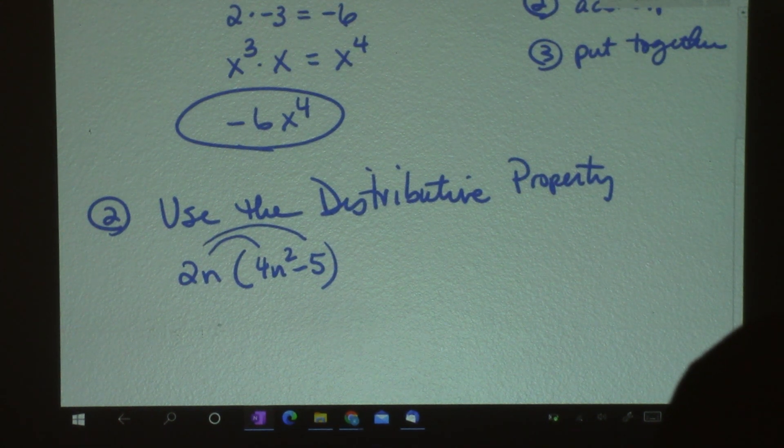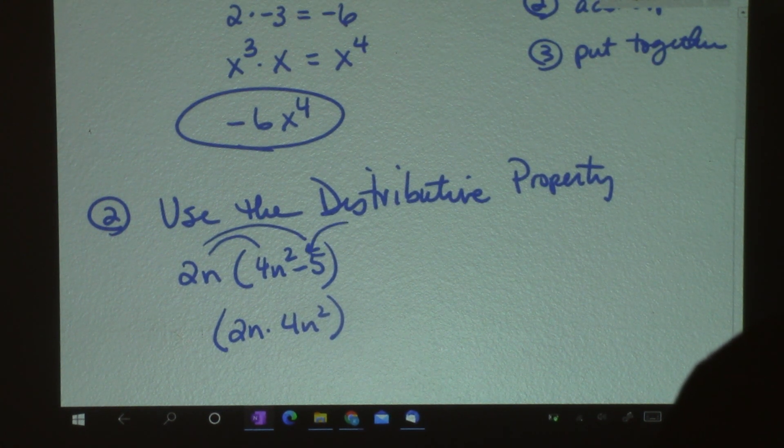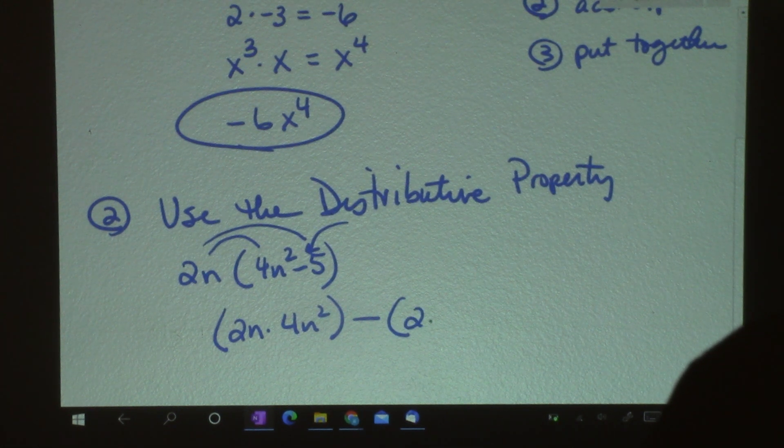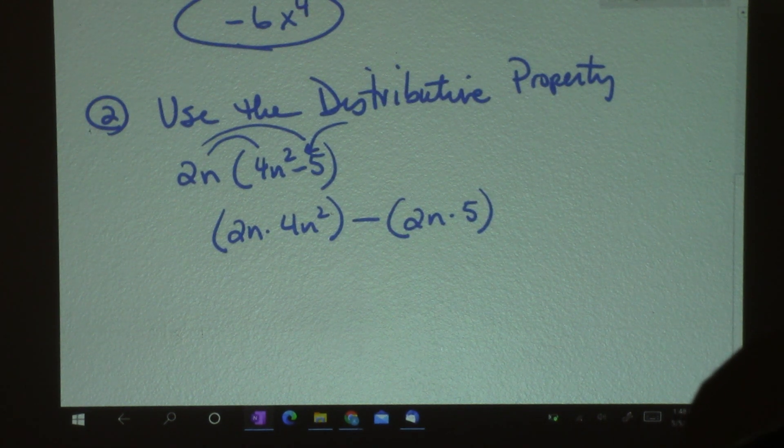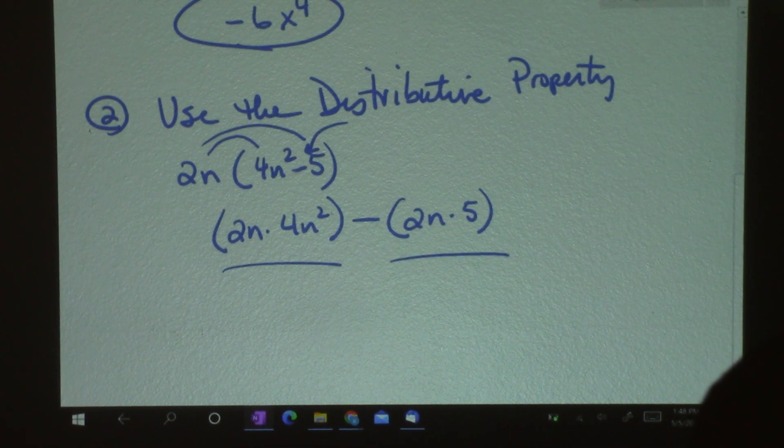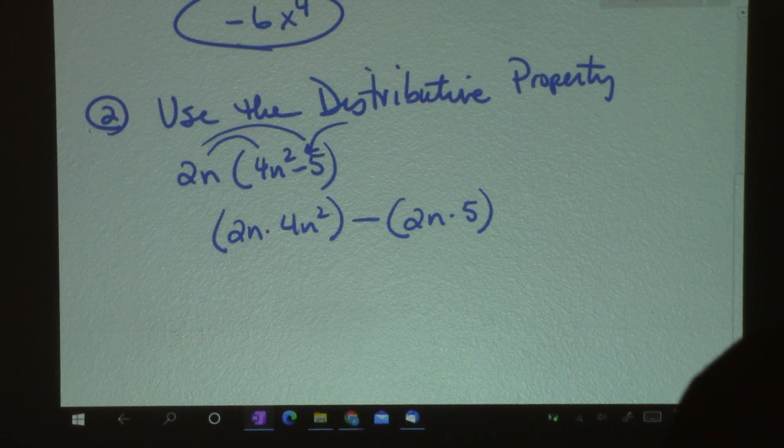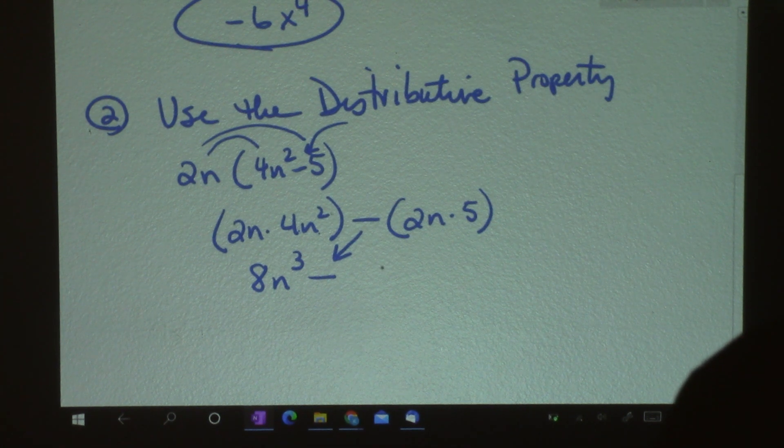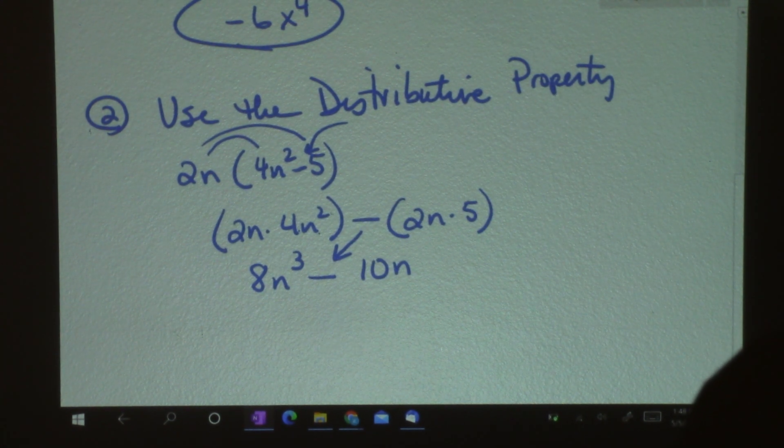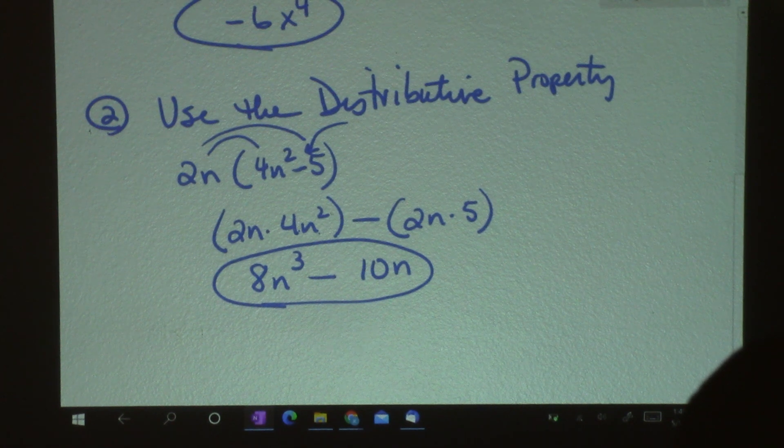So here I've got 2, so I'm going to have 2 times negative 3. So those are my coefficients, and I get negative 6. And then with the variable, I have negative 3x times x. And as you know, you add exponents when you're multiplying. So that is x to the 4th. And then I put it together. That would be step 3, and I get negative 6x to the 4th.